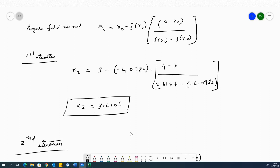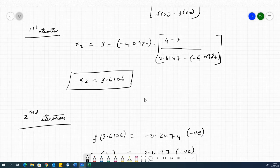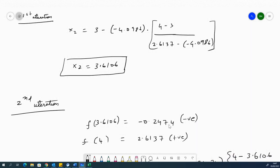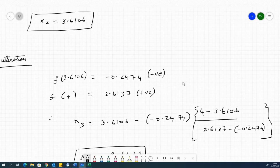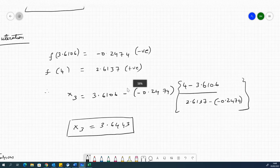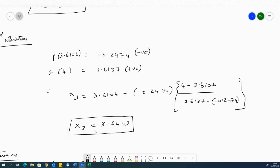Similarly using x2 value, so if you substitute the value of x2 in the function, you will see that this value is negative. Therefore, it means that the interval is shrinking between x2 and x4, x2 and f of x equal to 4, which means the root is between 3.6106 and 4 because f of 4 is positive. Therefore, applying the same theory as before, we would see that the next value is 3.6443.